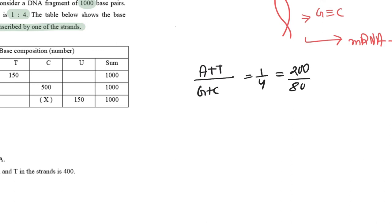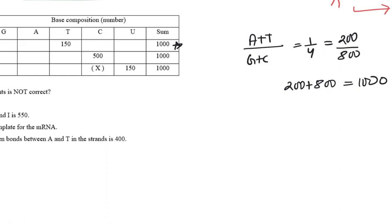So first, let's work on this problem. A+T/G+C = 1/4, so that comes around to 200 A+T and 800 G+C. Now if there's 150 T, it has to be 50 A. So that part is solved.